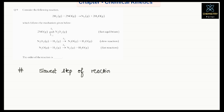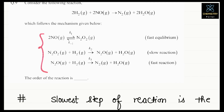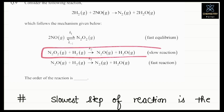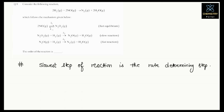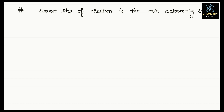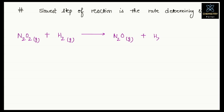From these three steps, which is the slowest step? This step is the slowest step: N₂O₂(g) + H₂(g) → N₂O(g) + H₂O(g). So now just write that reaction here.